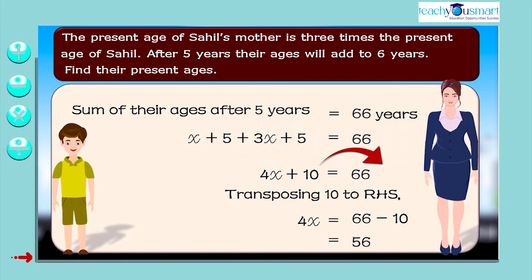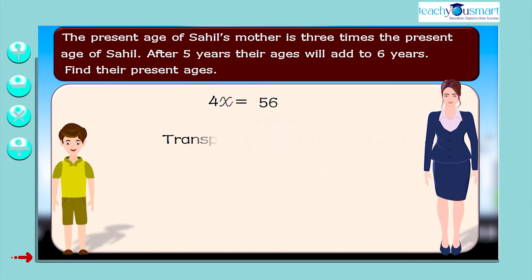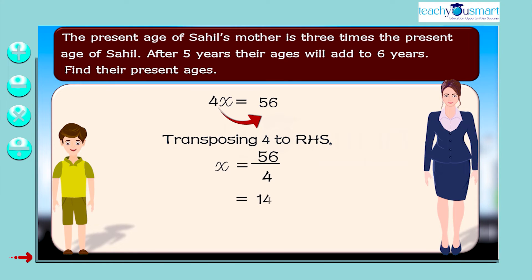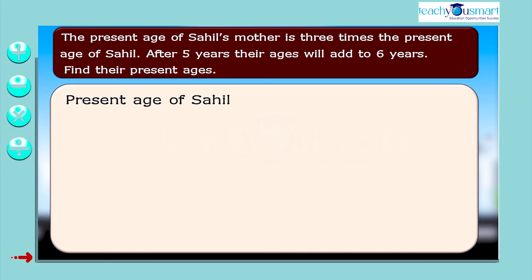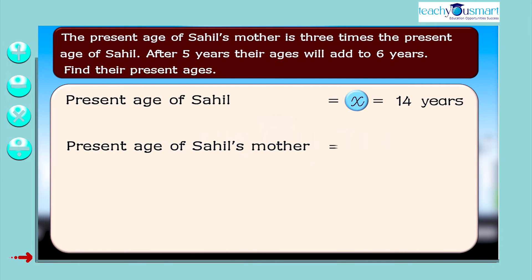So, the present age of Sahil equals x equals 14 years. The present age of Sahil's mother equals 3x equals 3 multiplied by 14 equals 42 years.